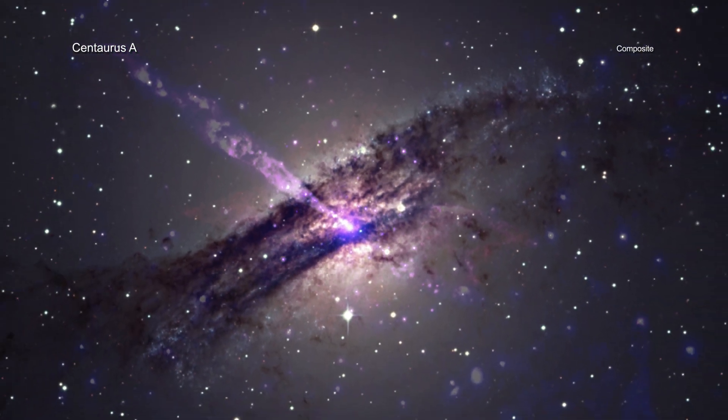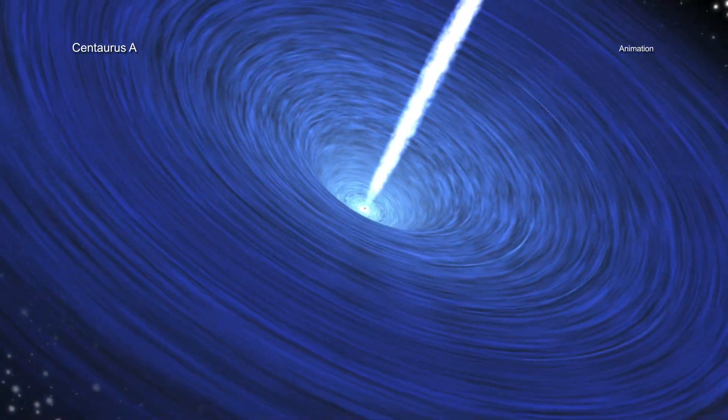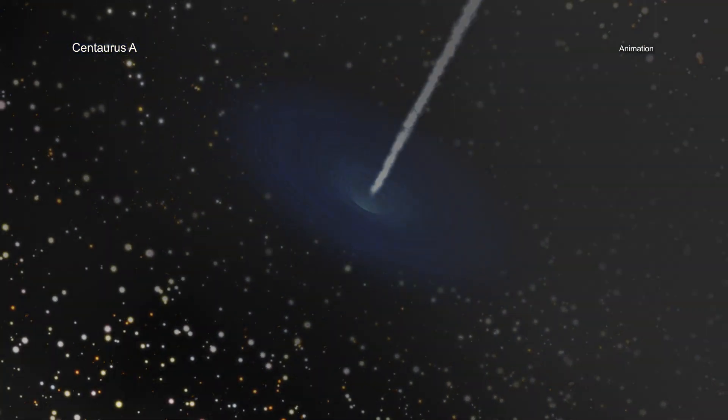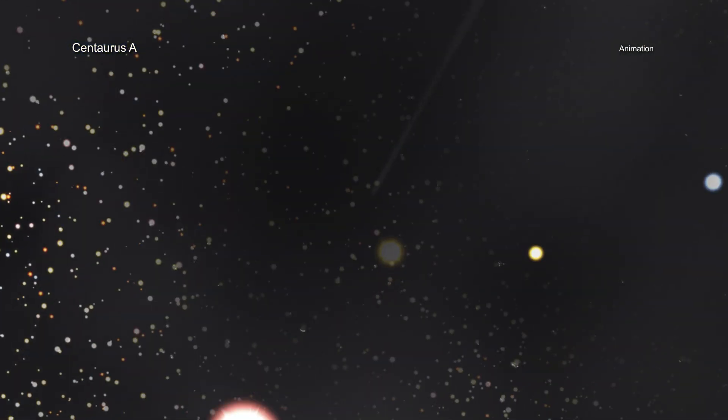Astronomers have long studied Cen A because it has a supermassive black hole in its center sending out spectacular jets that stretch out across the entire galaxy.